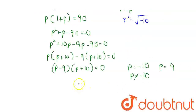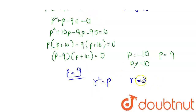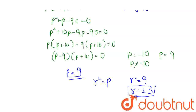So P = 9. Since we substituted R² = P, we now substitute back: R² = 9. Taking the square root gives R = ±3. Since the question does not specify that the common ratio is positive or negative, we have R = ±3, and this completes our solution.